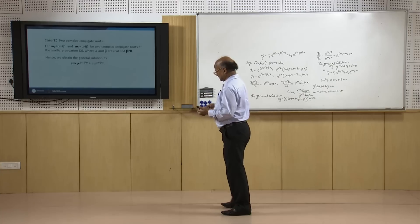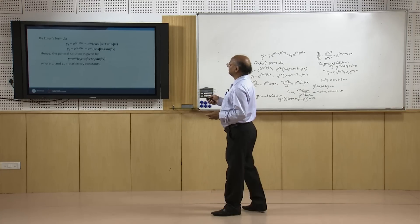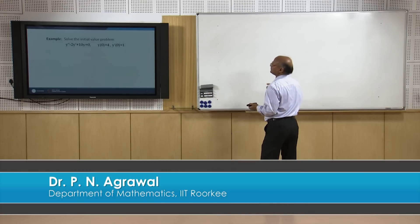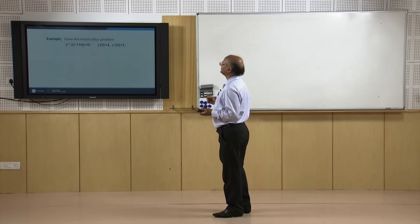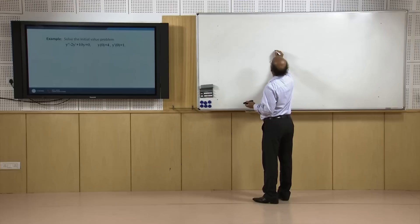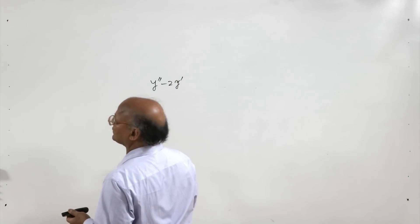Now let us go over to an example. We consider an initial value problem: y'' − 2y' + 10y = 0, with initial conditions y(0) = 4 and y'(0) = 1. These two initial conditions will determine a unique solution of the homogeneous linear differential equation of second order.